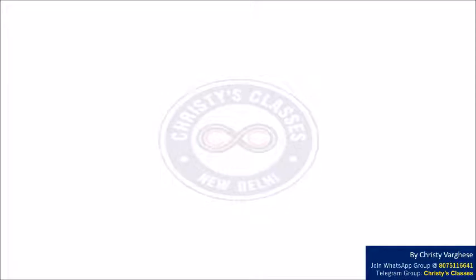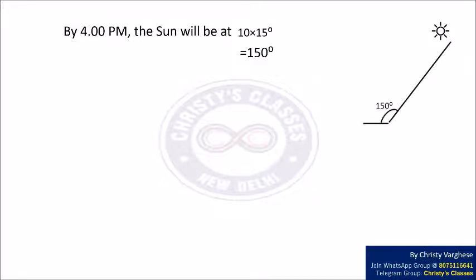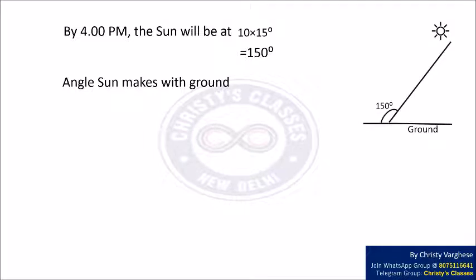Now consider 4 p.m. From 6 a.m. to 4 p.m. there are 10 hours, and the angle covered per hour is 15 degrees. Therefore, by 4 p.m. the sun will be at 10 × 15 = 150 degrees. Since this angle from the horizon is 150 degrees, the angle the sun makes with the ground is 180 − 150 = 30 degrees.